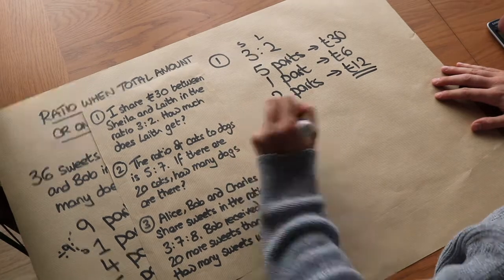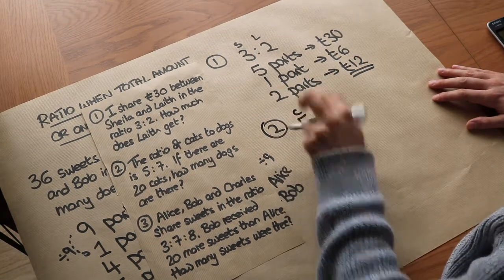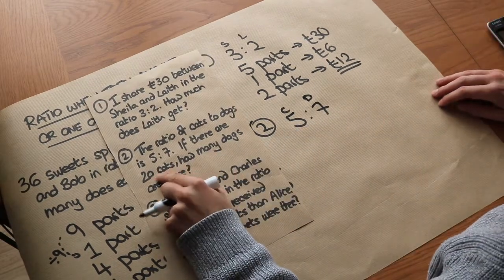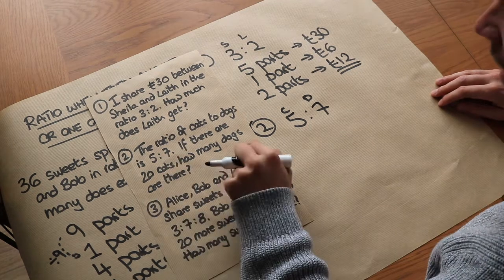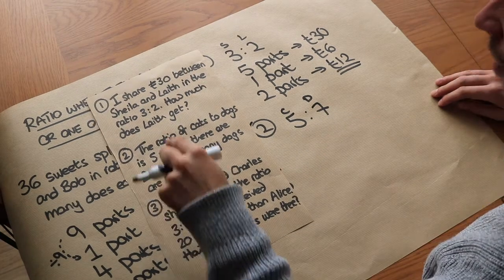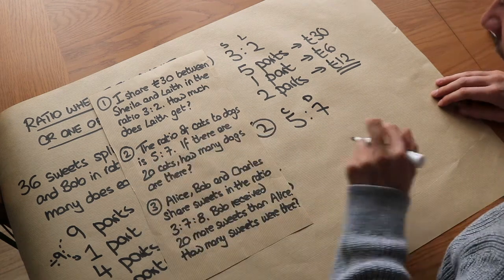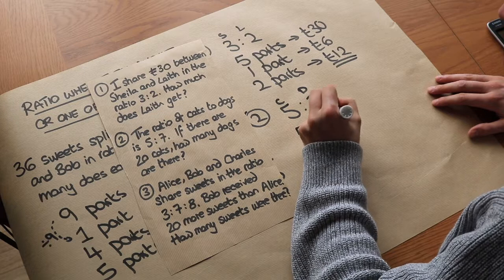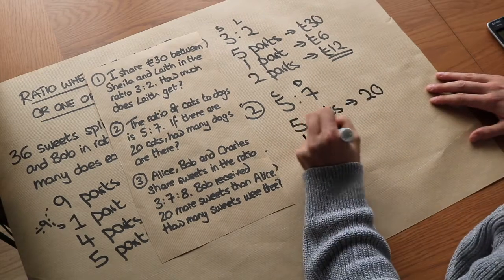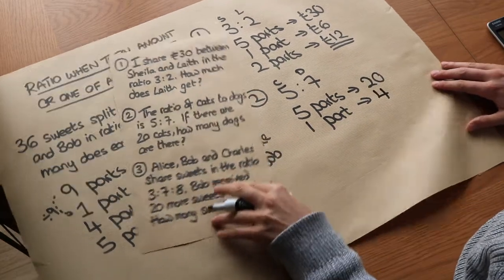The next question: the ratio of cats to dogs is 5 to 7. If there are 20 cats, how many dogs are there? The 20 cats refers to one of the particular parts in the ratio — specifically the 5 parts for cats. So 5 parts represents 20 animals. We can work out 1 part: it's 5 times less than 20, which is 4. So 1 part represents 4 animals.